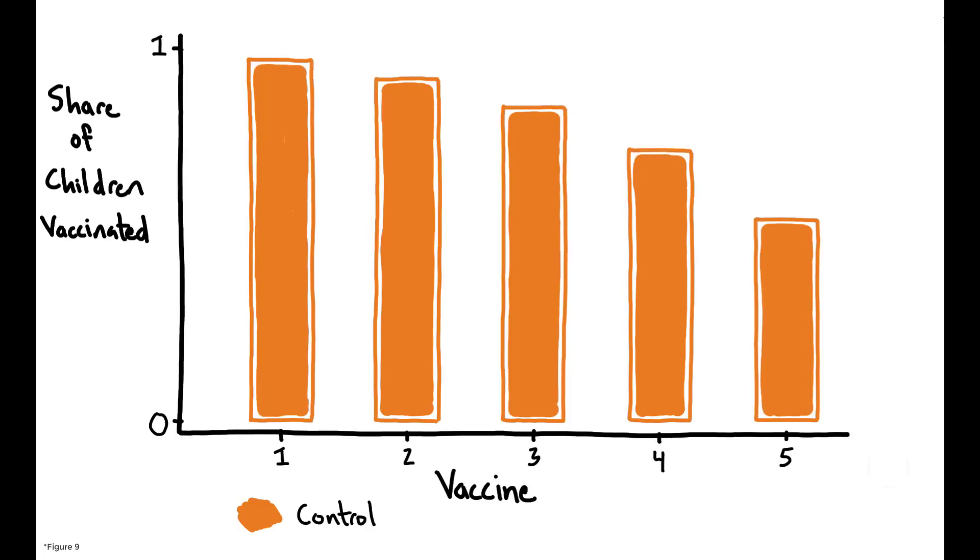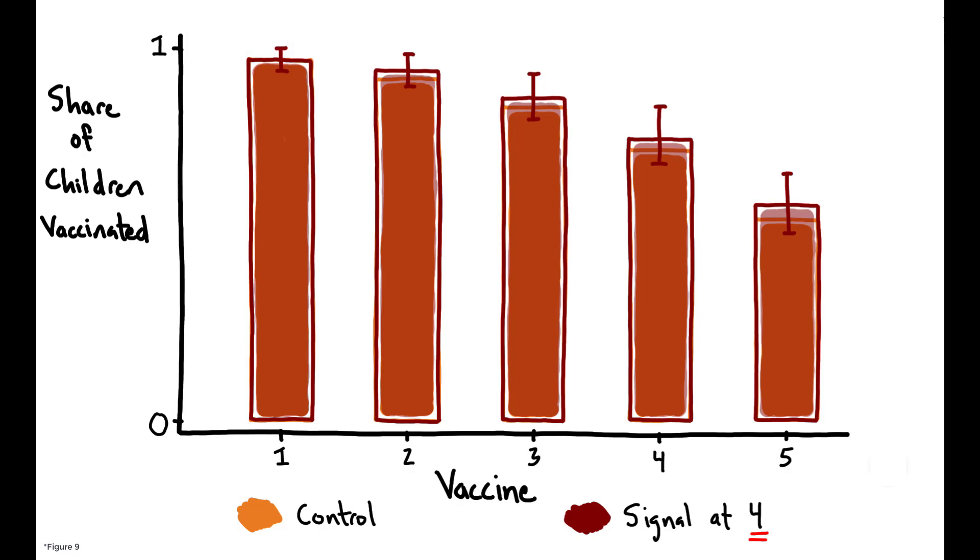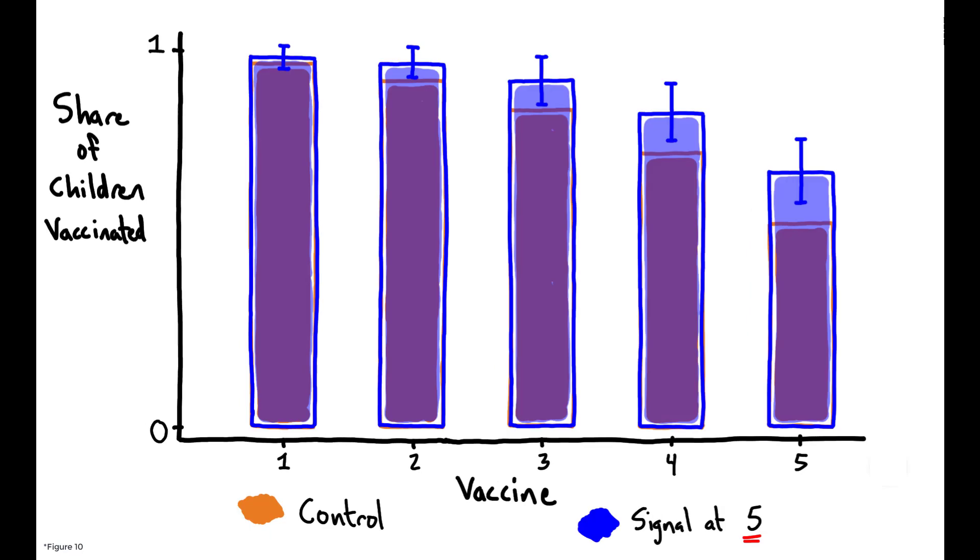Interestingly, breaking out the two signaling groups reveals that these effects are almost entirely driven by the signal at five. While the signal at four led to only small and insignificant increases in vaccination rates, the signal at five had very large effects.